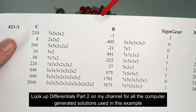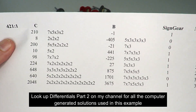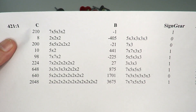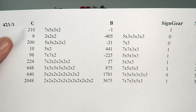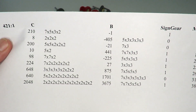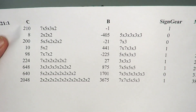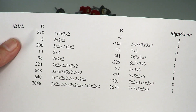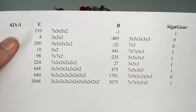For example, C could be 7 × 5 × 3 × 2 and B equals −1, and that gives us a solution for generating the 421-to-1 gear ratio.